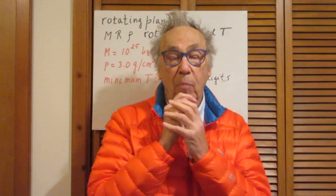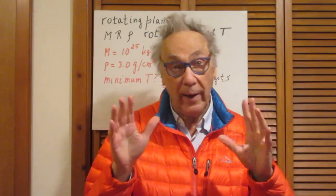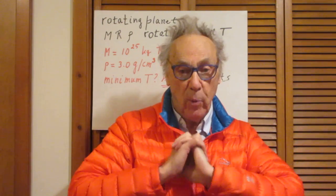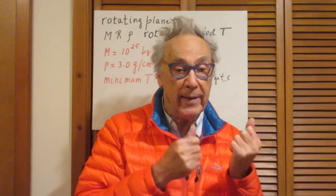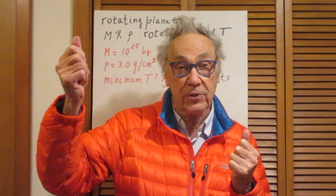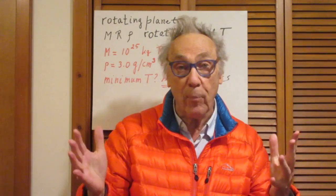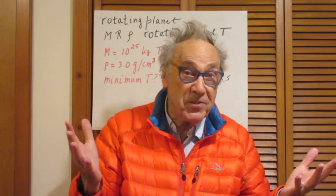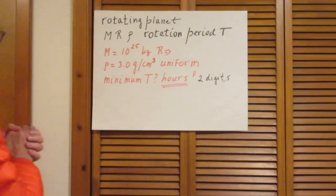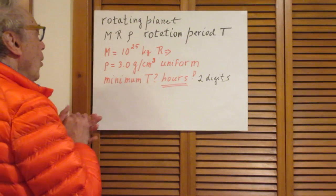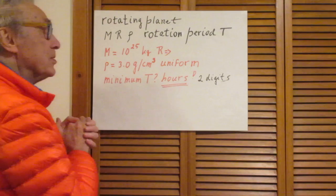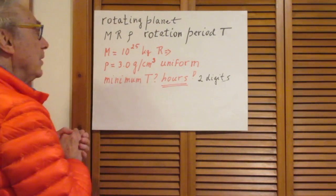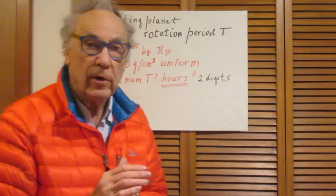If the rotation frequency of this planet — and this holds for all planets, by the way — is too high, then the gravitational acceleration at the equator will not be high enough to provide the necessary centripetal acceleration. As a result, matter will start to move outwards from the equator, and so the planet becomes unstable. In other words, the planet cannot then exist. I would like you to calculate approximately the minimum period — which would be the maximum frequency — at which this instability occurs, and I'd like that in hours. It's easier for me to check, two-digit precision.